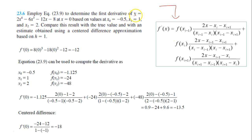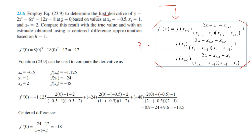Given here an equation y equals 2x⁴ minus 6x³ minus 12x minus 8, the question asks you to find the first derivative at the point x equals 0. Given values x0, x1, and x2 — three values — recall that this equation requires three values of f(x) and three corresponding values of x. Compare this result with the true value and with an estimate obtained using a centered difference approximation based on step size equals 1.